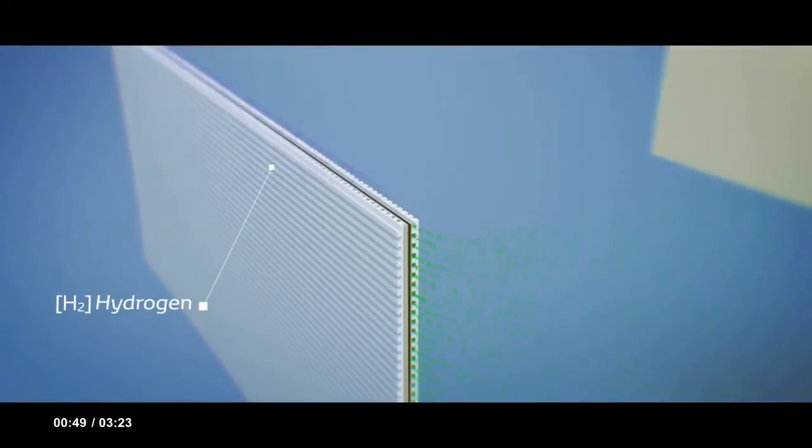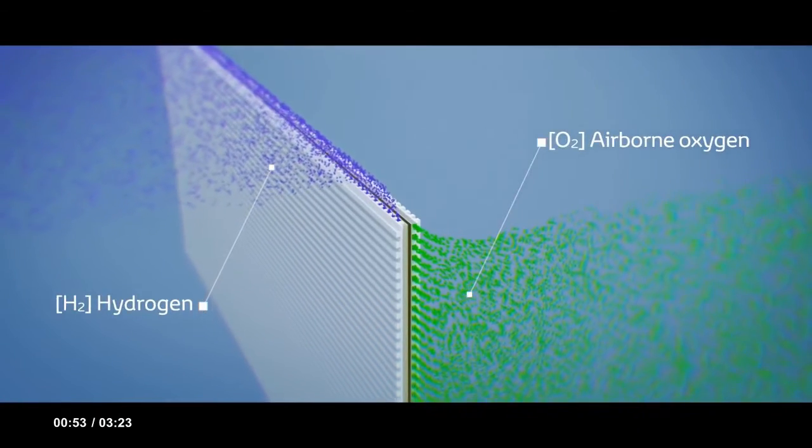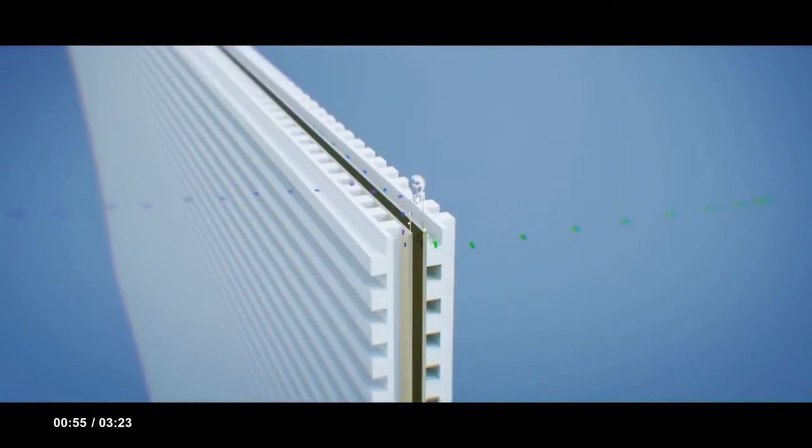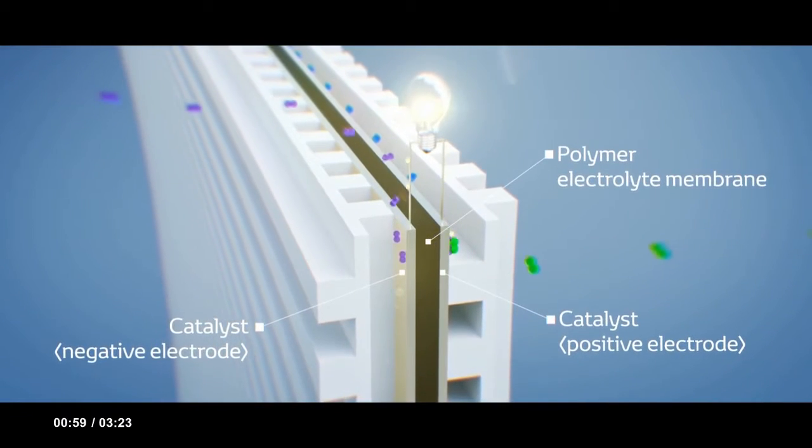This is how the electricity is generated. The car takes in oxygen from the air which meets hydrogen from the high pressure hydrogen tank in the fuel cell. Many fuel cells combine to form the fuel cell stack.